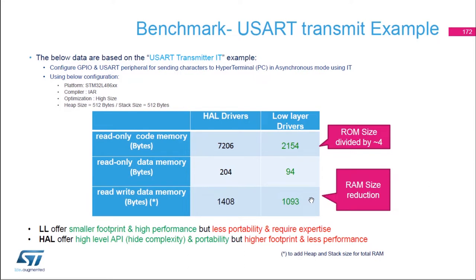In terms of code size, we are dividing by four the code size — going from 7.2 kilobytes to 2.1 kilobytes. We see the same differences for the RAM size as well. There is actually a big difference in terms of RAM size, and note that this RAM size includes the heap and the stack.